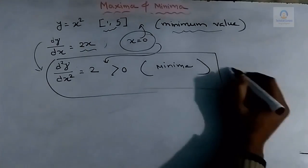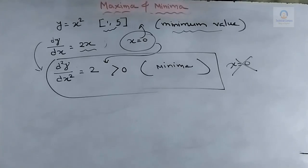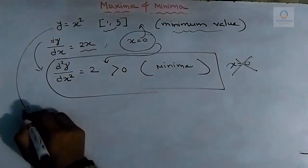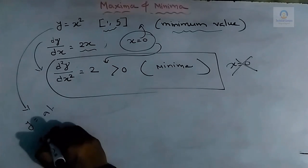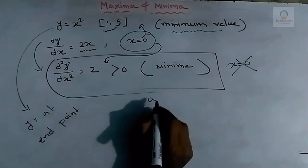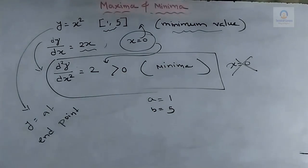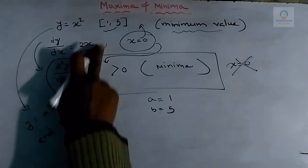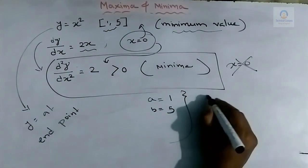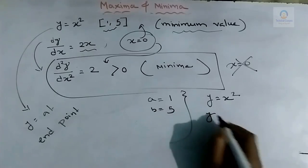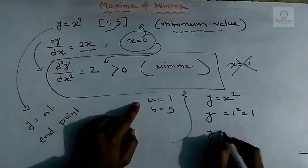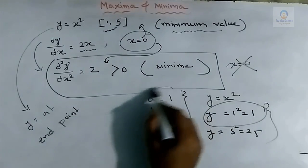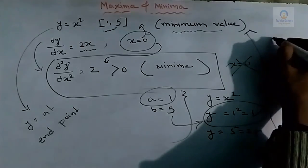However, the interval [1, 5] does not contain x = 0, so x = 0 is not a valid answer. When this type of situation arises, we have to check the value of the function at the end points of the interval. The end points are a = 1 and b = 5. Putting x = 1 gives y = 1² = 1, and putting x = 5 gives y = 5² = 25. Among these values, 1 is the minimum, so the answer is 1 and the correct option is b.